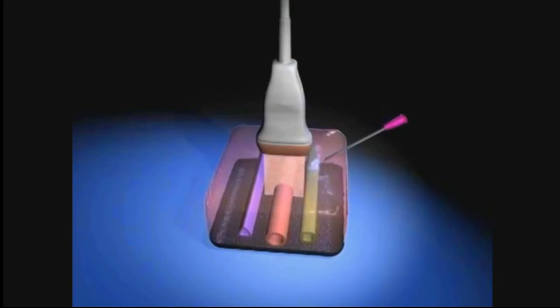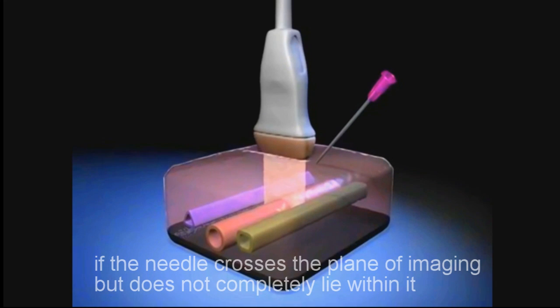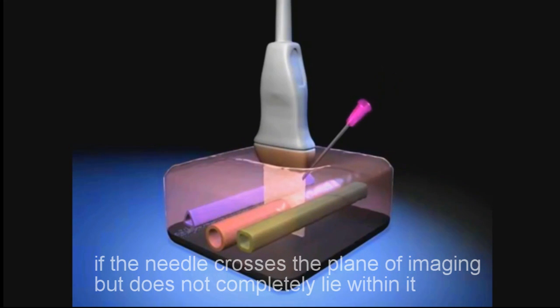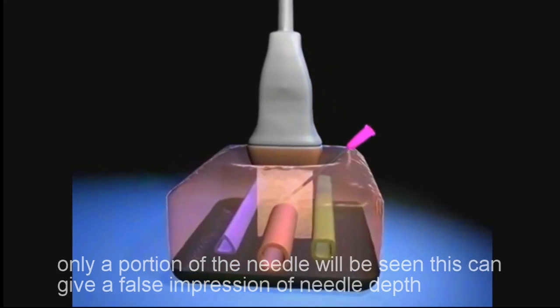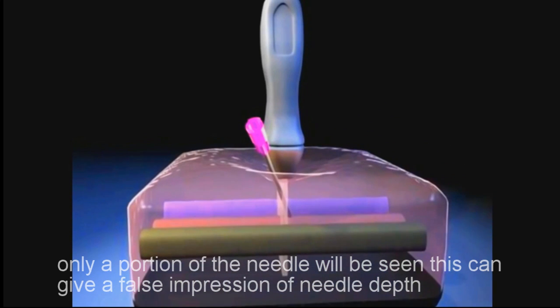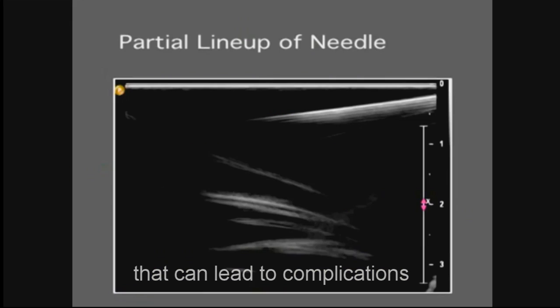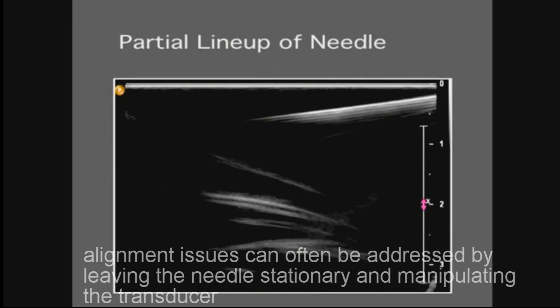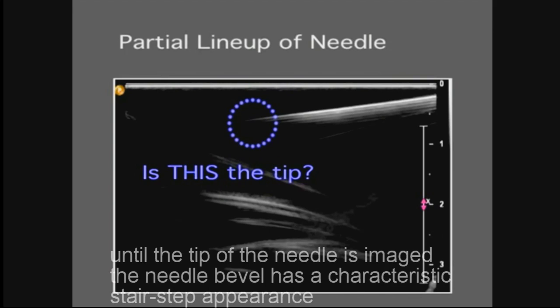If the needle crosses the plane of imaging but does not completely lie within it, only a portion of the needle will be seen. This can give a false impression of needle depth that can lead to complications. Alignment issues can often be addressed by leaving the needle stationary and manipulating the transducer until the tip of the needle is imaged.